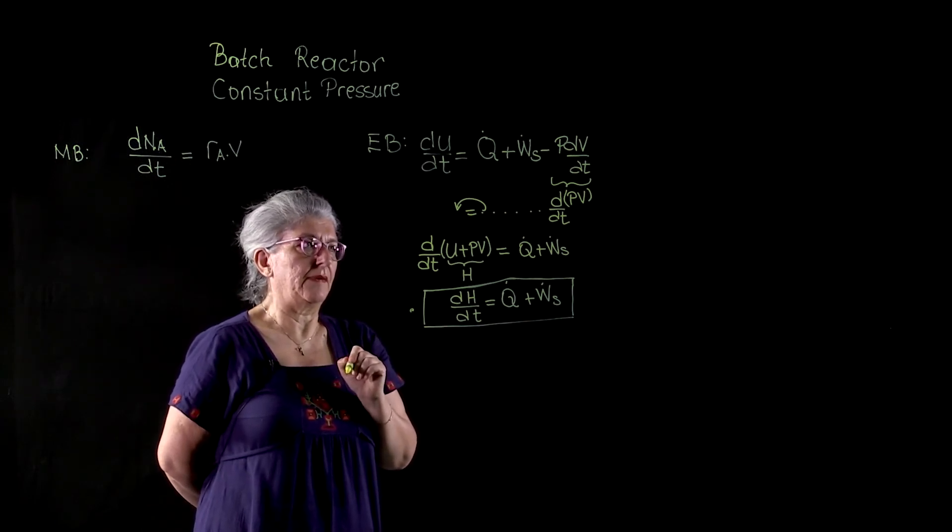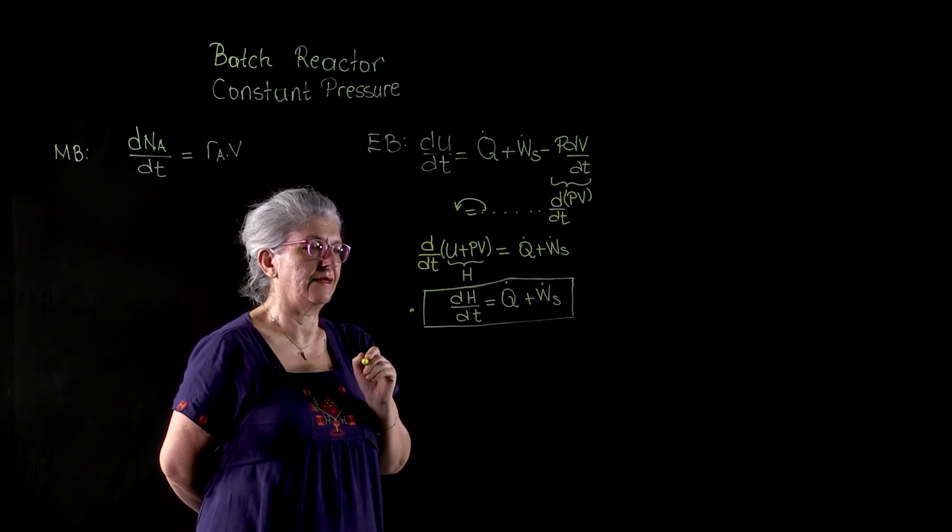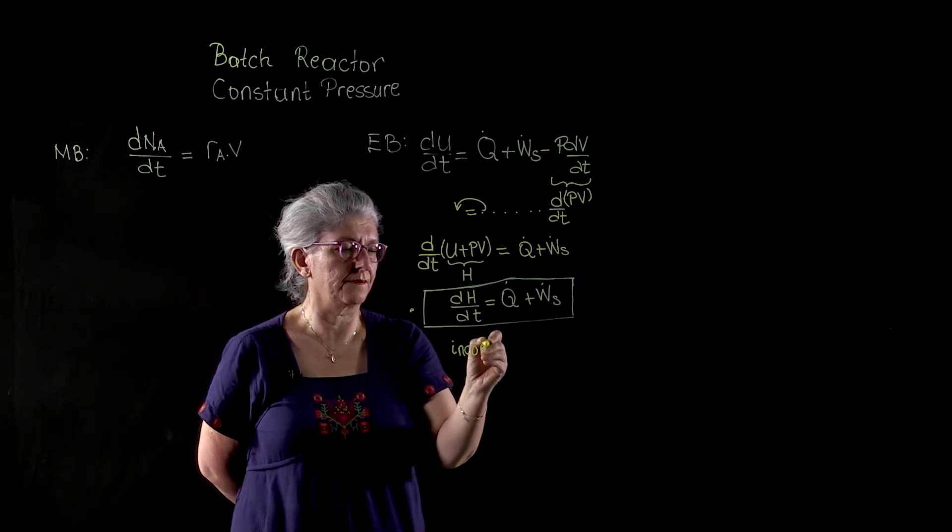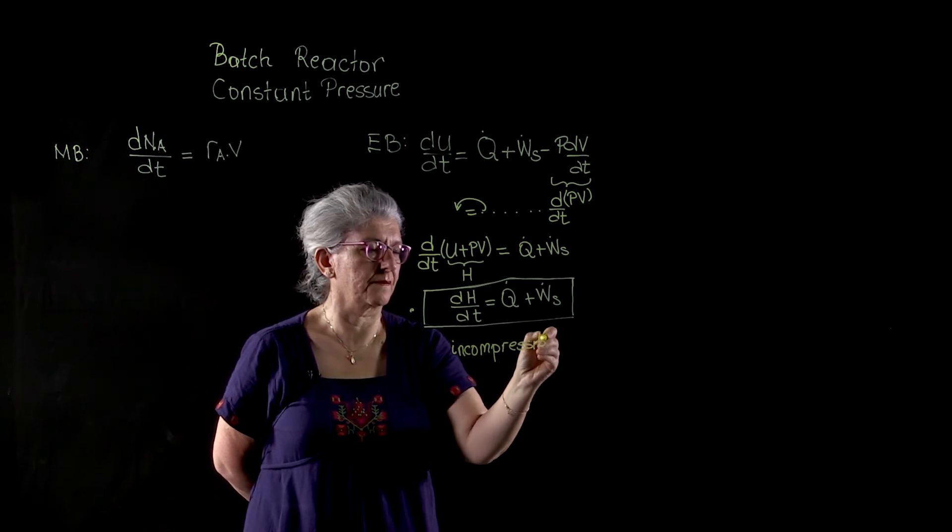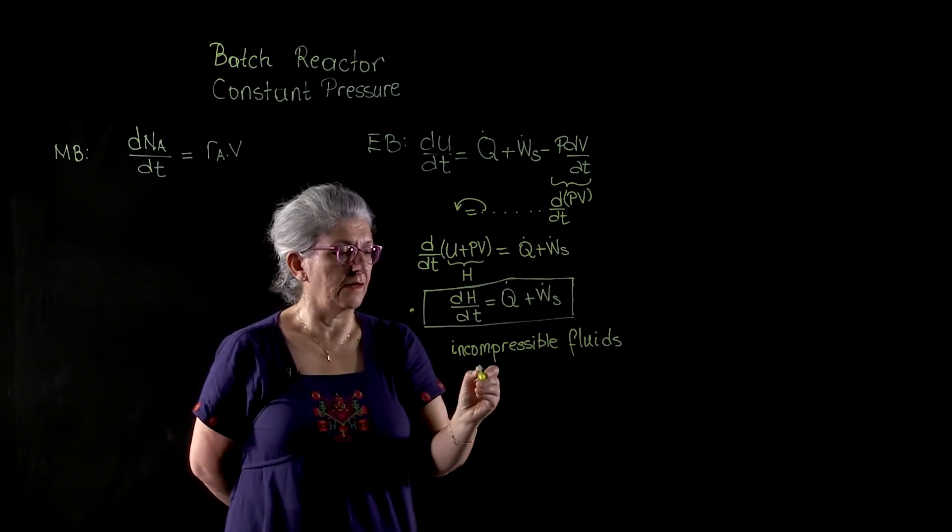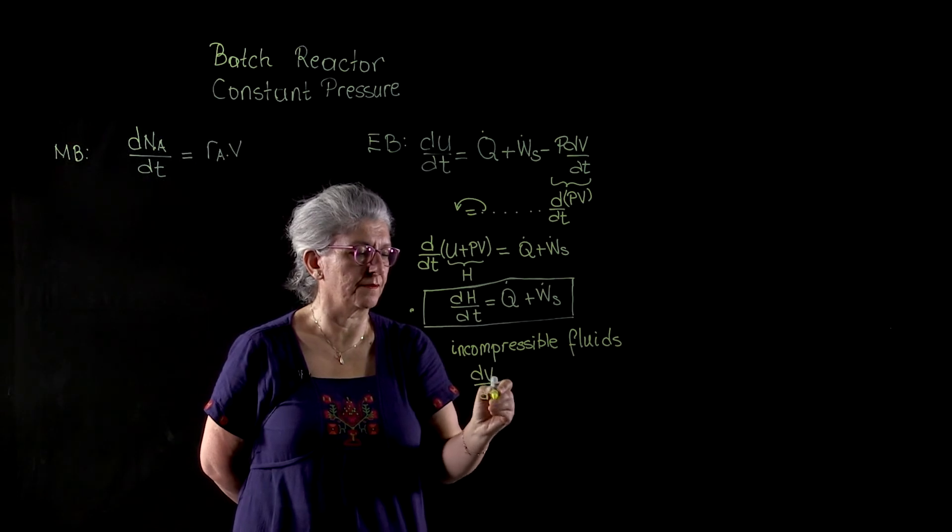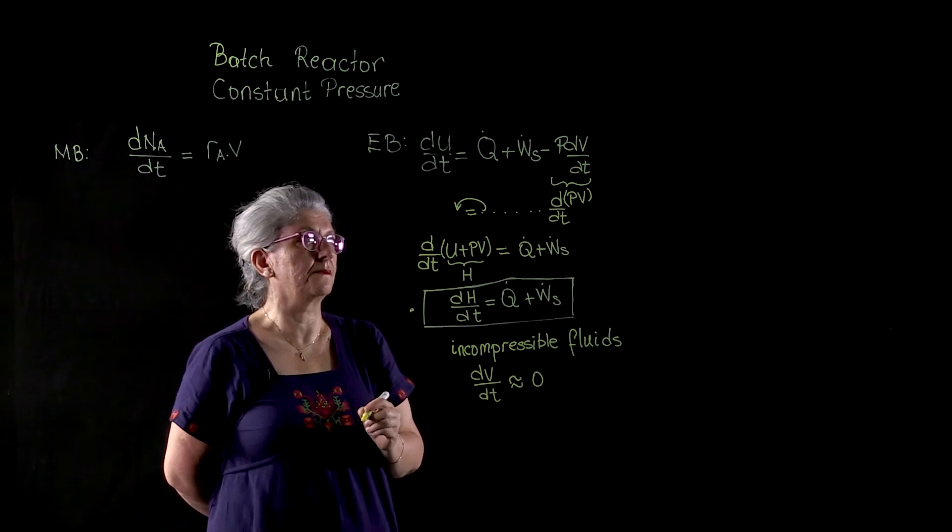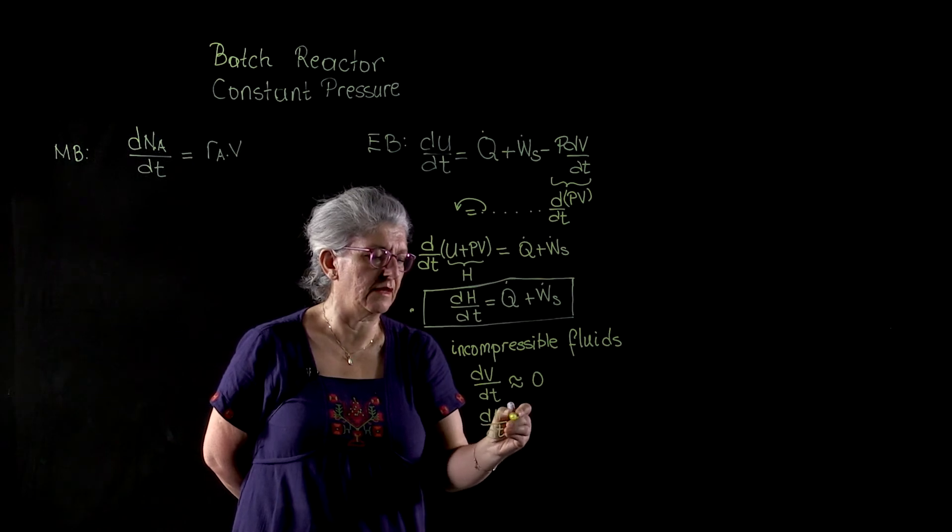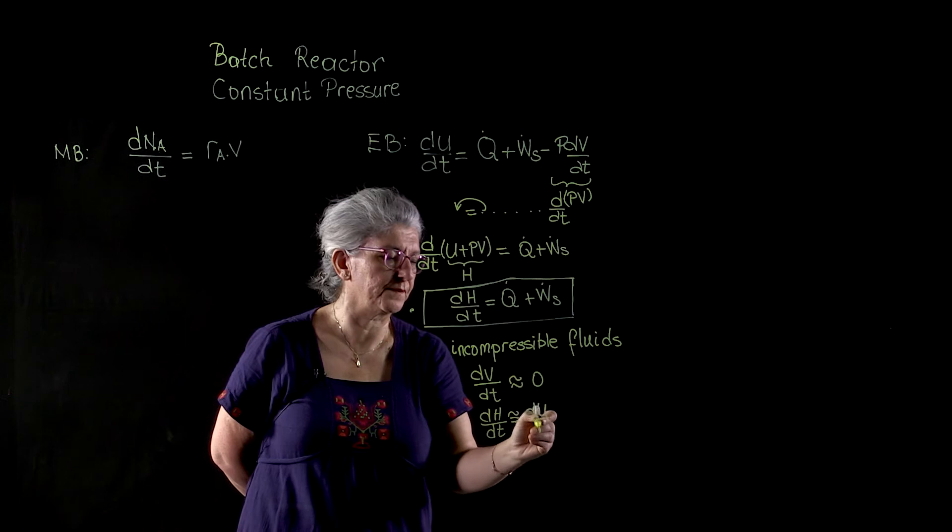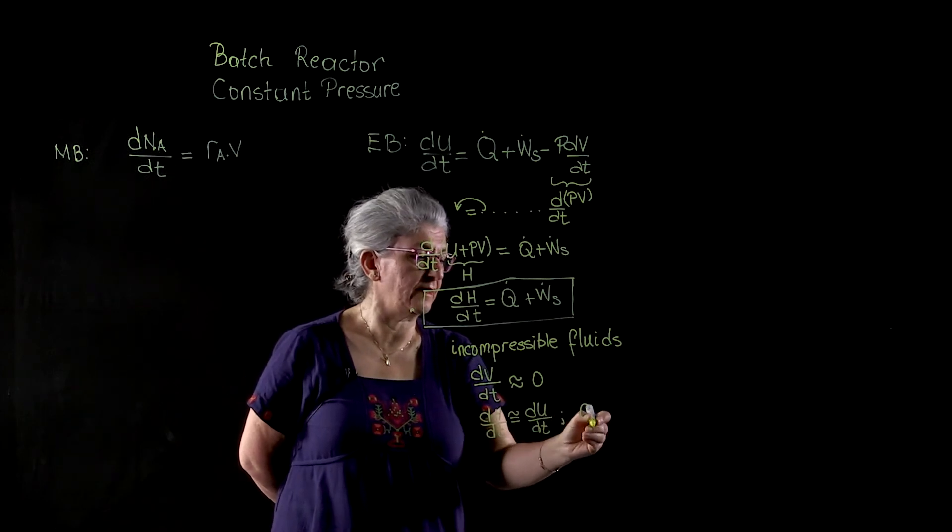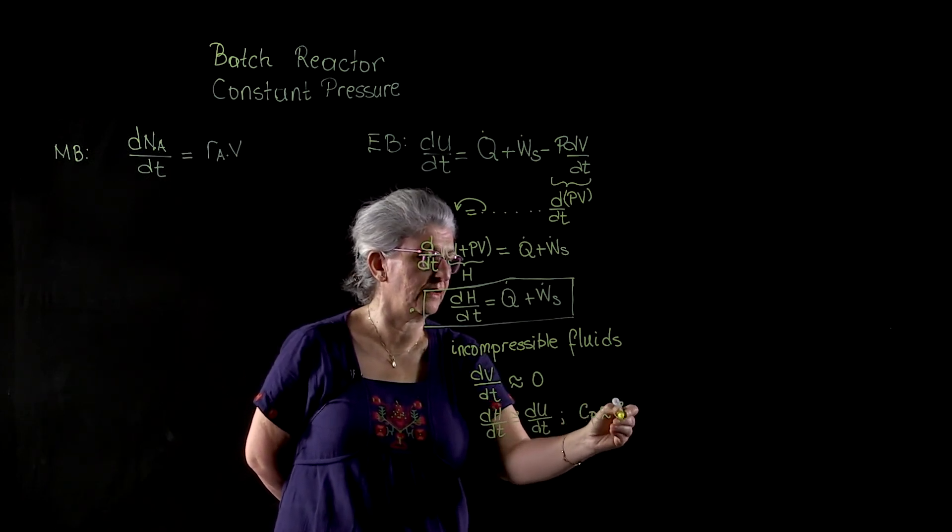But we have to also keep in mind that under constant volume conditions, for incompressible fluids such as liquids, dV/dt term is approximately 0. dV/dt and dH/dt is approximately equal to dU/dt. And as a result, heat capacity at constant pressure is almost equal to the heat capacity at constant volume.